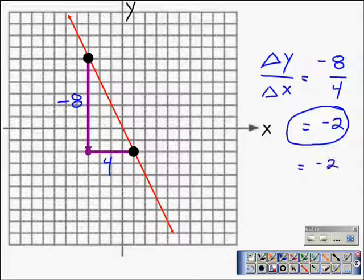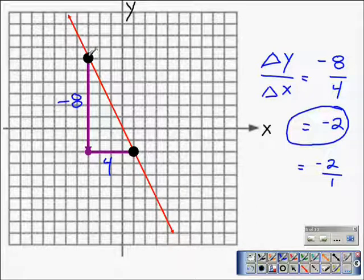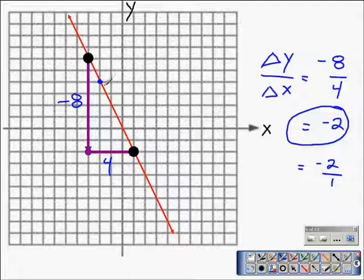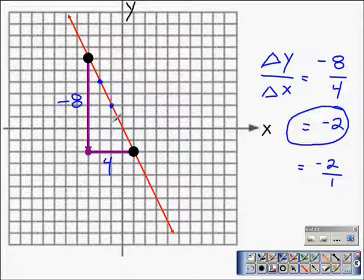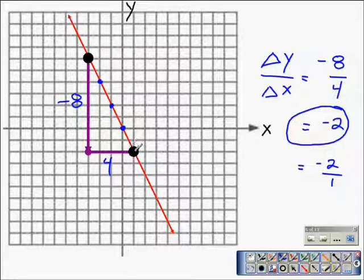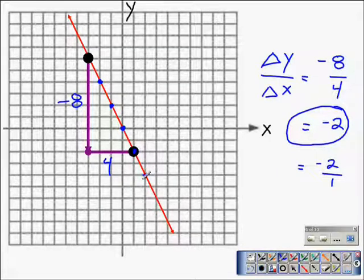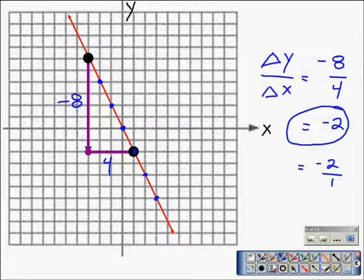Which means we would go from one point on the line to the next point by going down 2 and to the right 1. And that would give us what's called a good point. And from that good point we go down 2 and to the right 1, and that gives us the next point. We continue going down 2 and to the right 1, and that will help us identify every good point on the line.